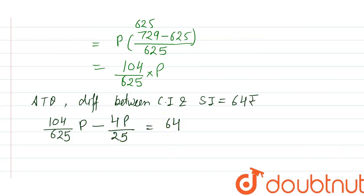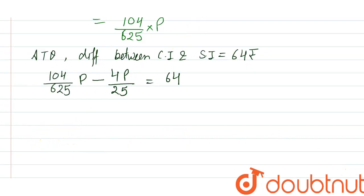to 64 according to question. The difference is given. Now let's solve it by taking LCM 625. So this is 104P - 100P = 64. So 104 minus 100, it...